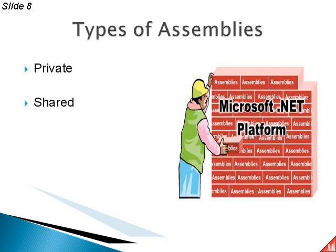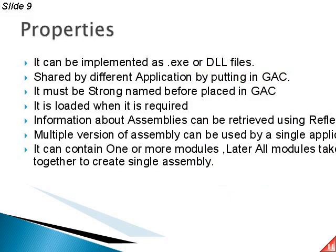A private assembly is created for a single application and can only be used by that application. A shared assembly is available in a central place and can be used by multiple applications. An assembly can be an exe or a DLL file. If an assembly is to be shared by different applications, it must be placed in the Global Assembly Cache (GAC), it must be strong-named, and it should be loaded only when required. Information about the assembly can be retrieved using reflection, and multiple versions of an assembly can be used by a single application.